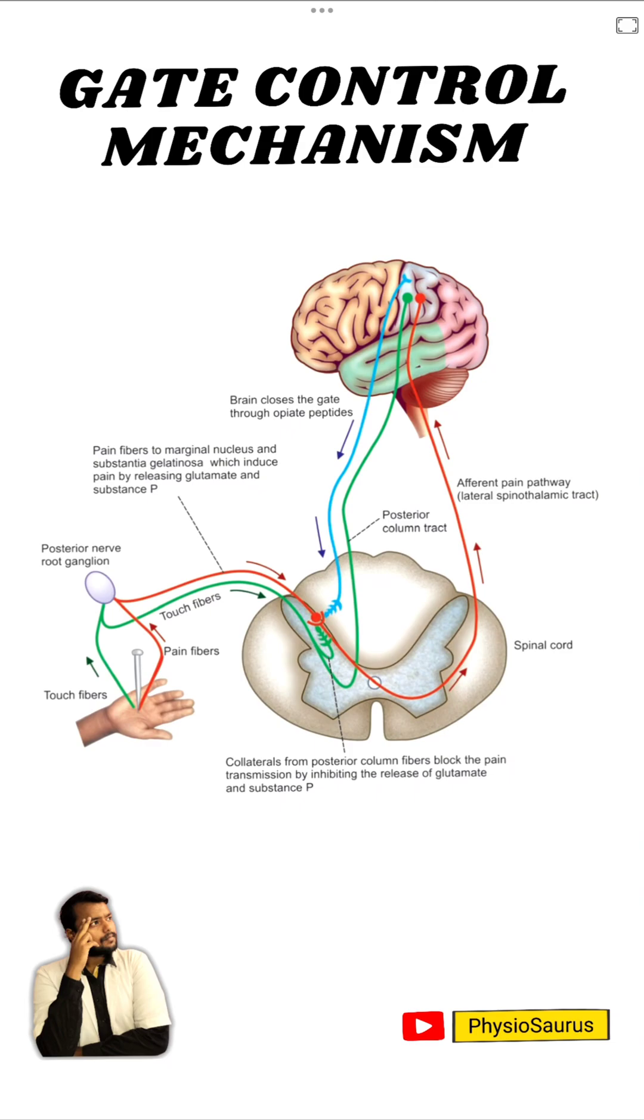Ever wondered why rubbing your arm after a bump, getting a massage, using an ice pack, or even therapeutic modalities like TENS helps in pain relief? Well, there is actually a science behind it and it's called the gate control mechanism. In this video I'm breaking it down for you in the simplest way possible. So let's get started.